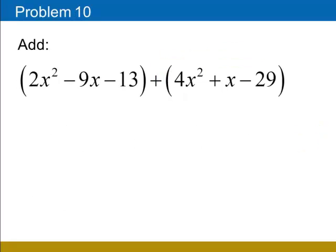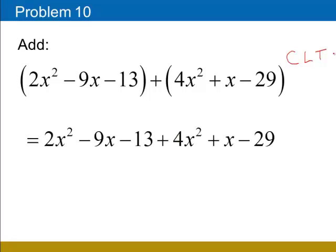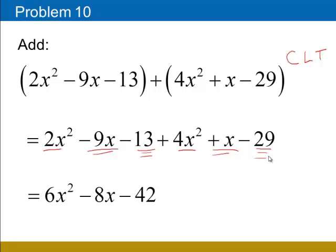In this problem, when we're adding two polynomials, all we have to remember is that we need to combine like terms. We do not need to change the sign of any of the terms in the second polynomial, so we'll ignore the parentheses and combine like terms. We're going to combine 2x squared with 4x squared, which is 6x squared. We're going to combine negative 9x with positive x, that's negative 8x. And negative 13 and negative 29 combined to be negative 42.